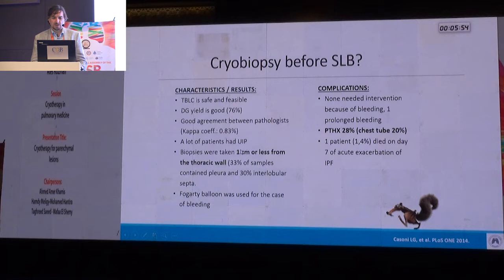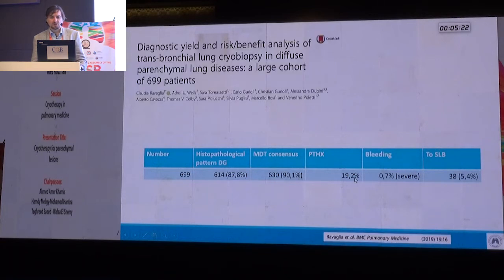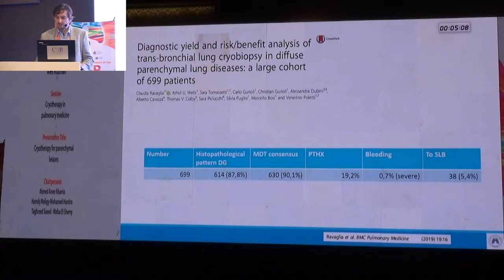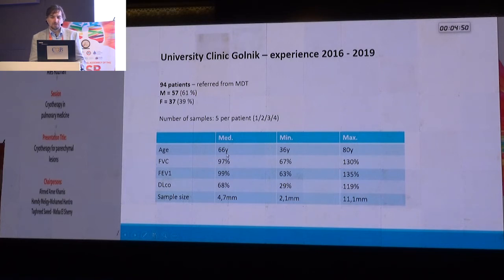In one study, many samples were taken very close to the visceral pleura, and many contained pieces of visceral pleura or interlobar fissure — mirrored in a high percentage of pneumothoraxes. Two real-life studies: one from the German group in Heidelberg with more than 100 patients showed diagnostic yield after multidisciplinary consensus of more than 80% with a very low complication rate. A large Italian study of almost 700 patients showed high multidisciplinary diagnostic yield with an acceptable complication rate, though with a slightly higher percentage of pneumothoraxes. From our own clinic with over 100 patients, 49 analyzed with preliminary results showed average age of 66 years, major deficit in diffusion capacity, and biopsy samples of around 5 millimeters.